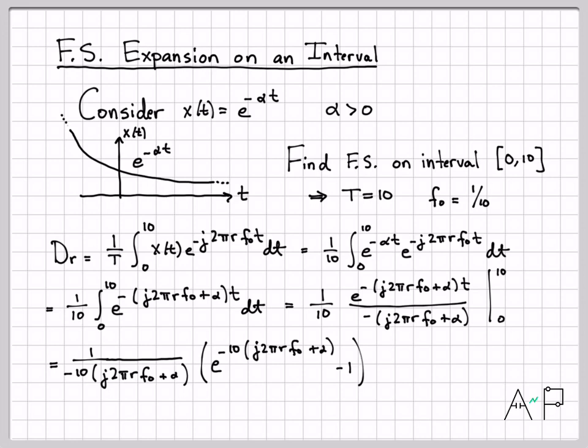When t equals 10, I get a minus 10 right here. And then I subtract off this value evaluated at t equals zero. e to the zero is one. So that's why I have a minus one right here.